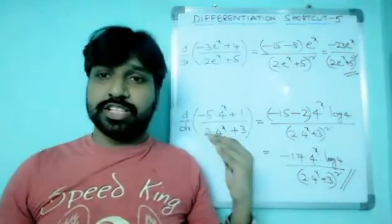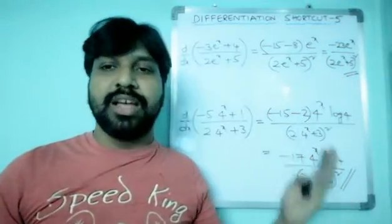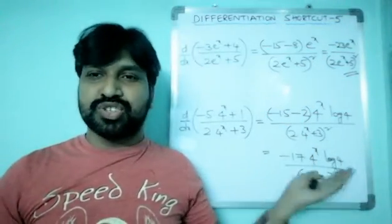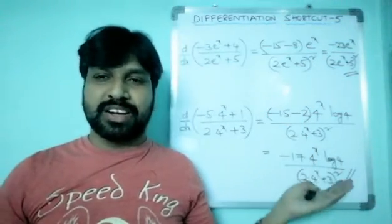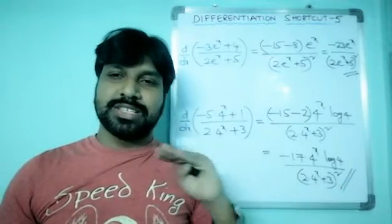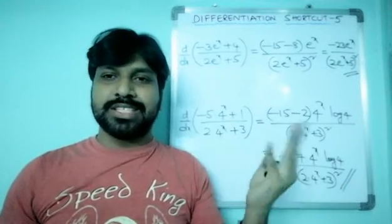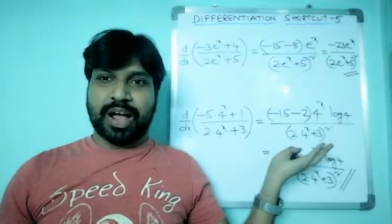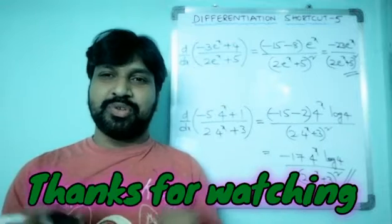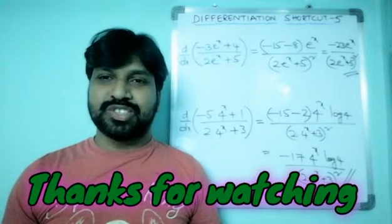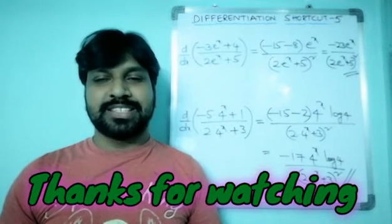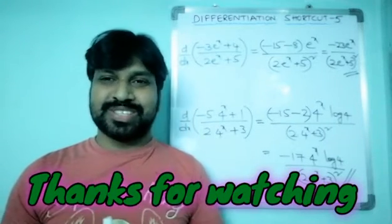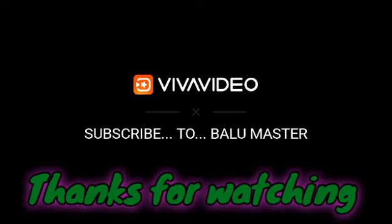Instead of using d/dx of u/v, this is the shortest method and it takes just 3 seconds. I hope you enjoyed the shortcut — thank you very much friends, that's all for today's class. Thanks a lot!